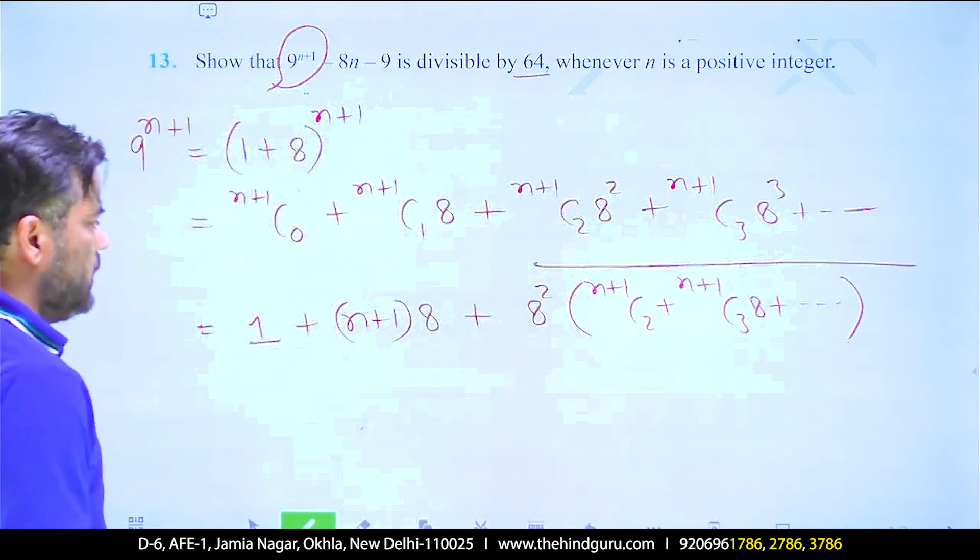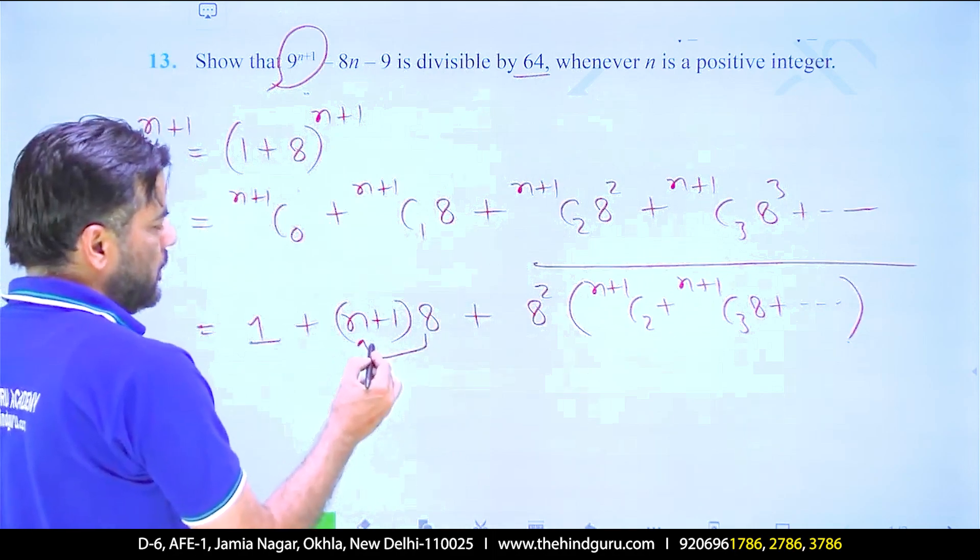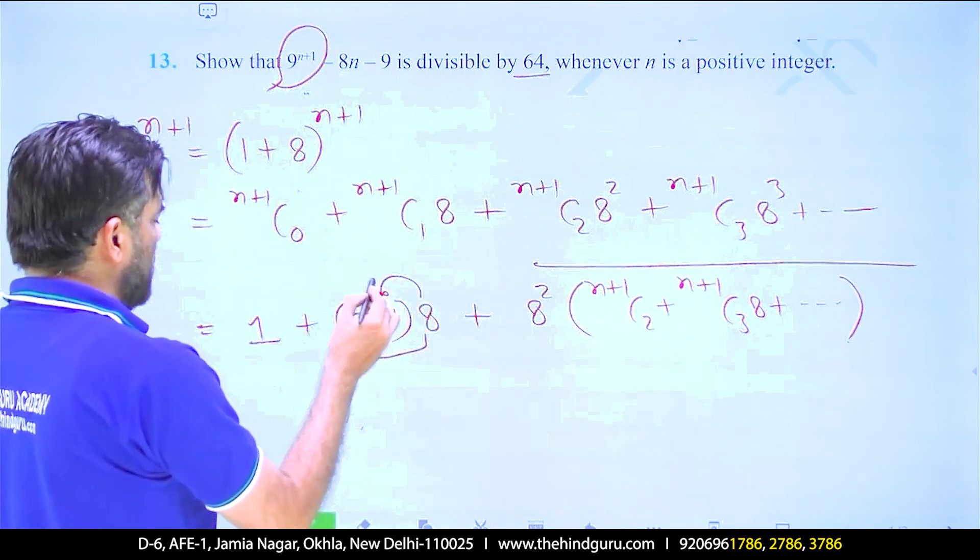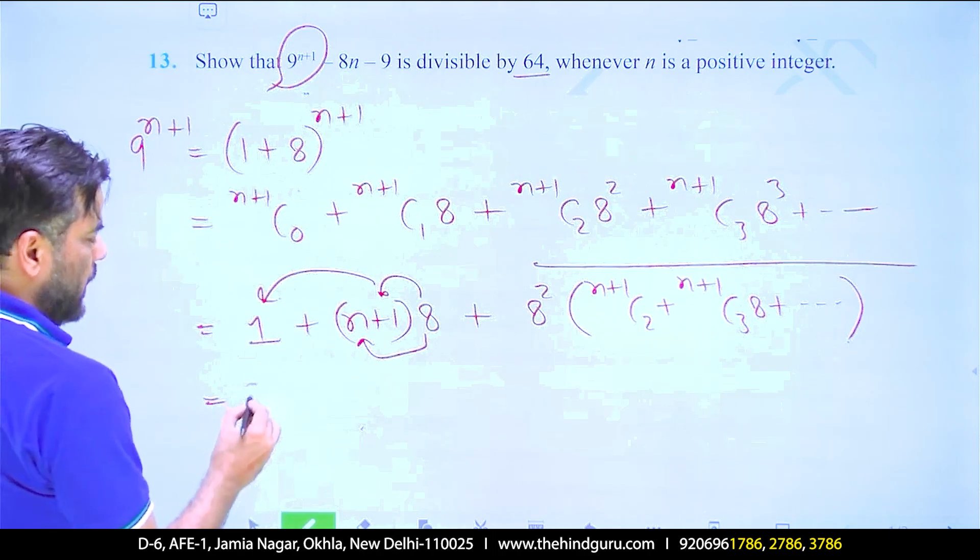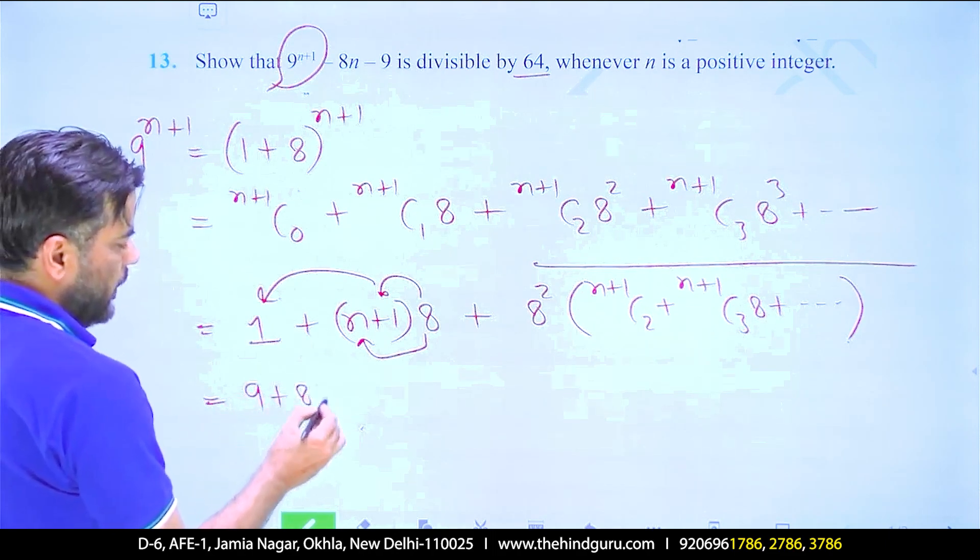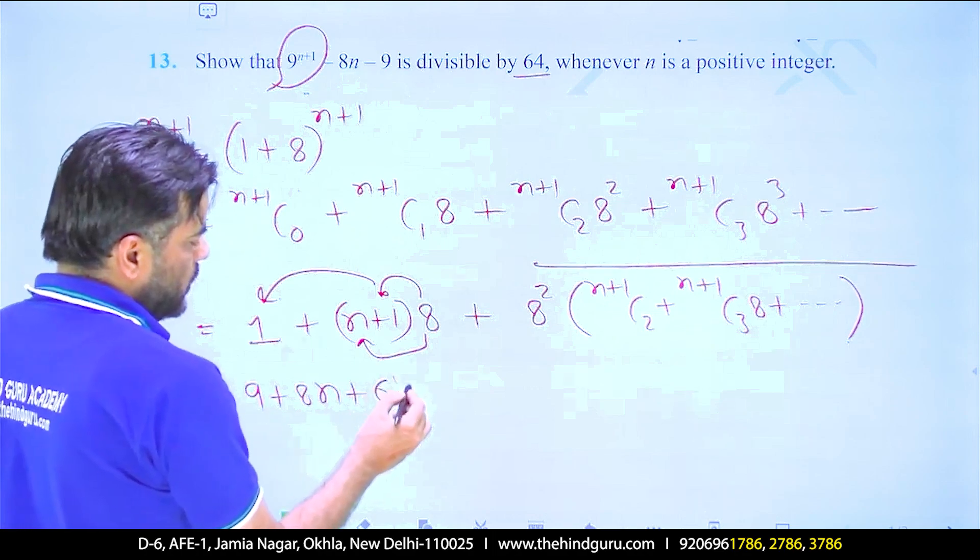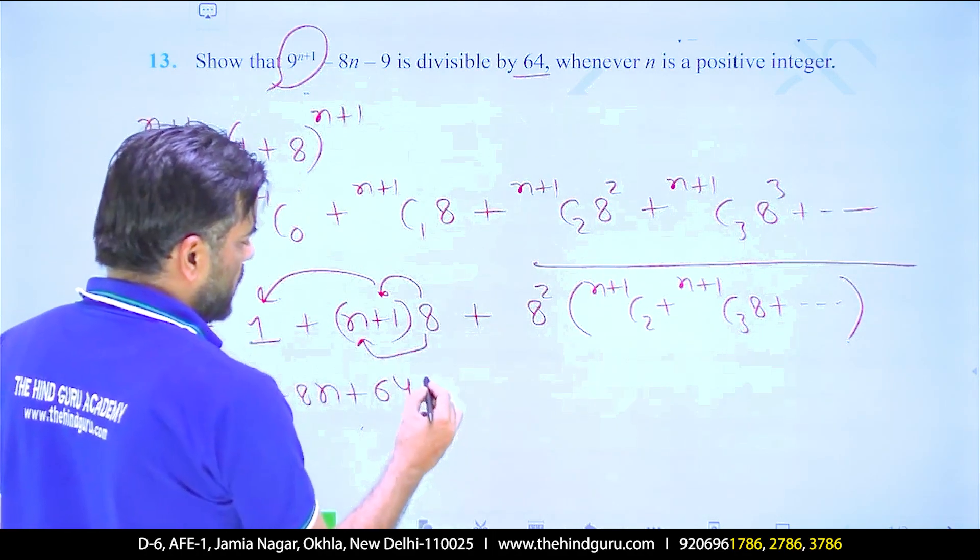Now if you check this, this will be 8n and 8, which is 8 plus 1 equals 9. So we have 9 plus 8n plus 64, and you can write this expression.